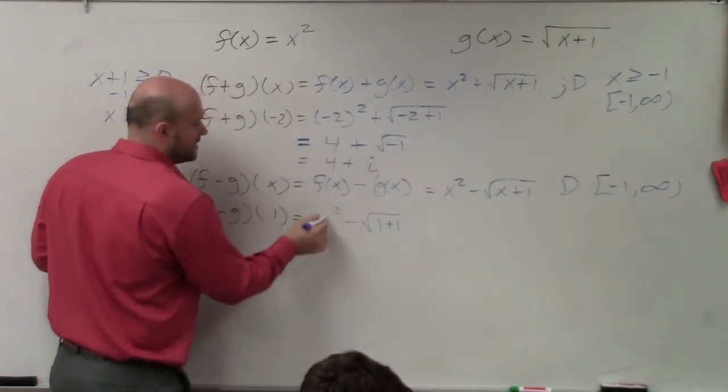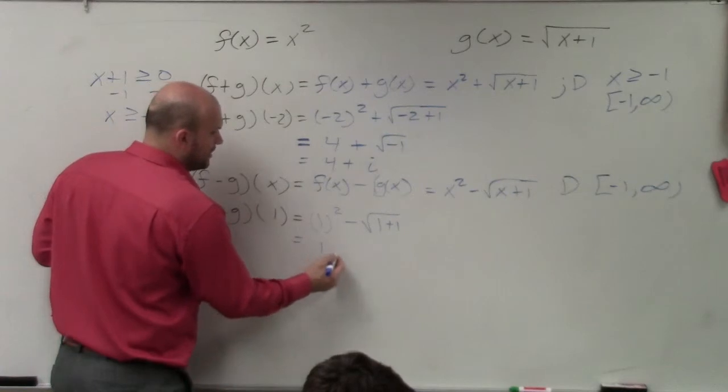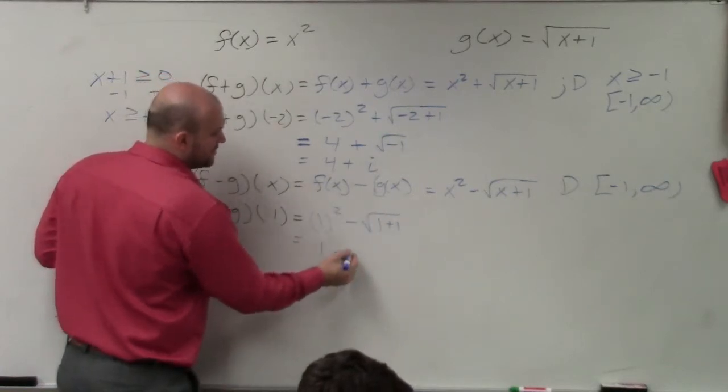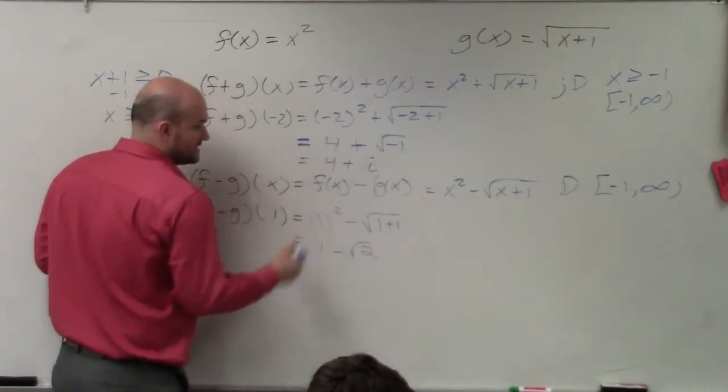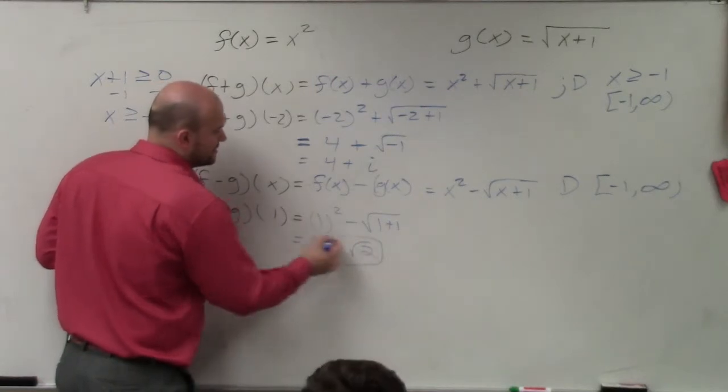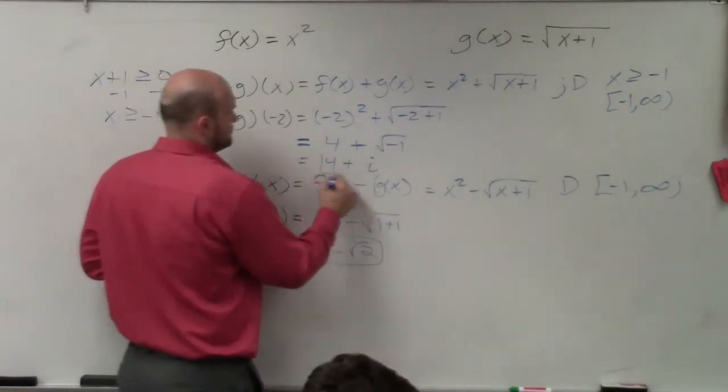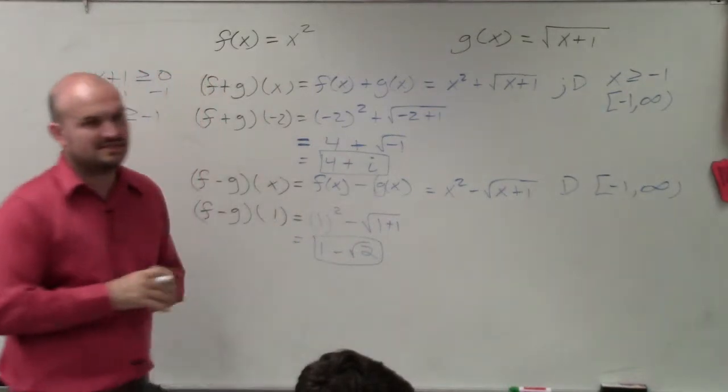So I have basically 1 squared, which is 1, minus 1 plus 1 is the square root of 2. You cannot subtract 1 minus the square root of 2. So you just leave that as is. And that's it.